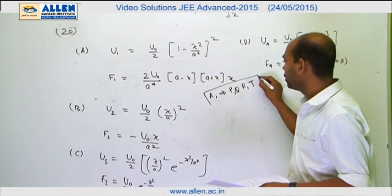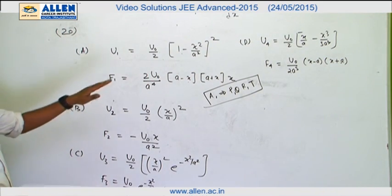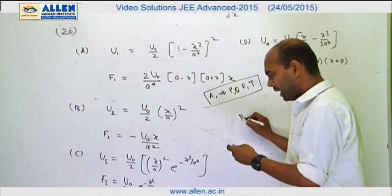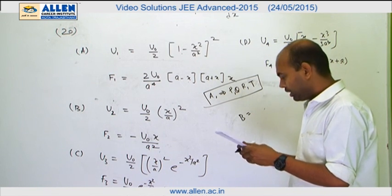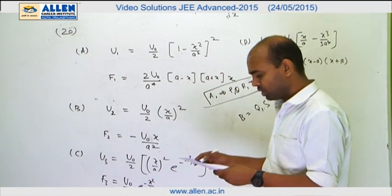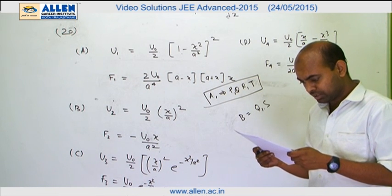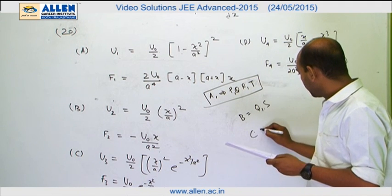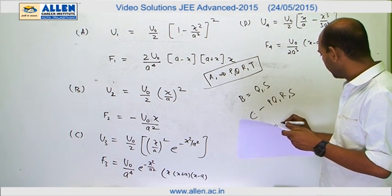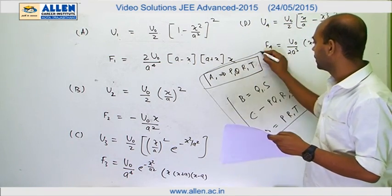So the answer for part A is P, Q, R, and T. Similarly, considering the same analysis for parts B, C, and D: the answer for B is Q and S — the force is zero at x = 0 (Q) and S. For C the answer is P, Q, R, and S, and for D the answer is P, R, and D.